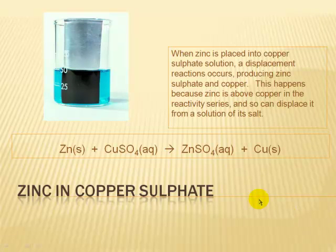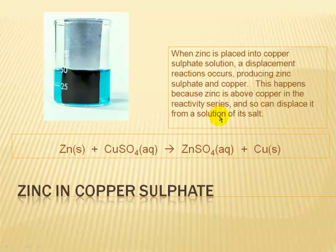Our last type of reaction is a displacement reaction. Here we have zinc and copper sulfate. When zinc is placed into copper sulfate solution, a displacement reaction occurs, producing zinc sulfate and copper. Remember the reactivity series — zinc is above copper, so it displaces it from its salt solution. Because zinc is more reactive, it displaces the copper, leaving zinc sulfate and copper.